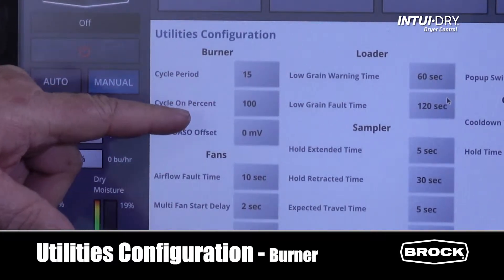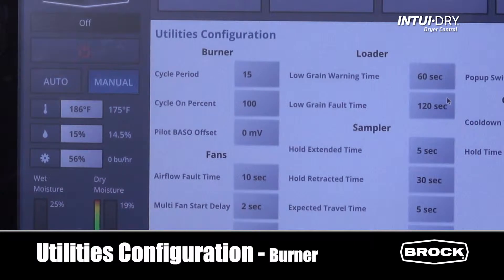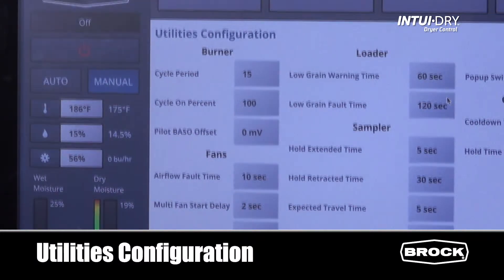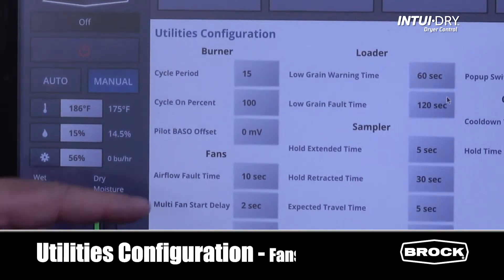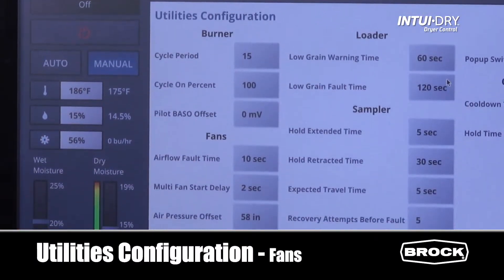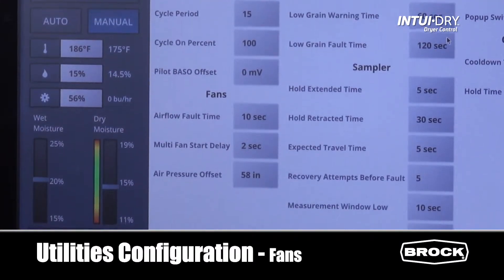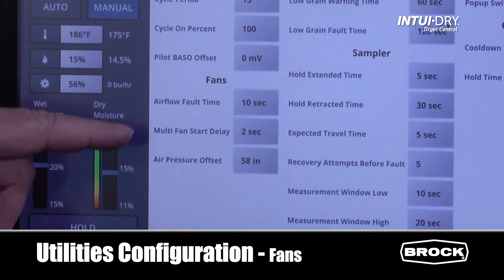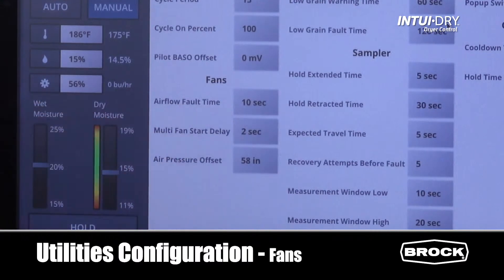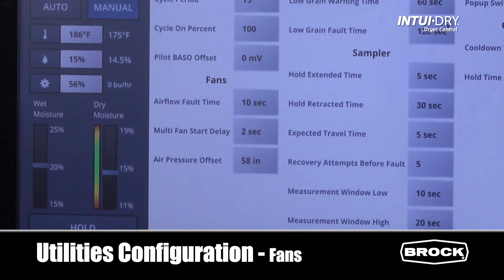On the fan airflow fault time, this is how long we wait to confirm air pressure once the fan starts. The multi-fan start delay is the time we wait between starting fan number one to fan number two, fan number two to fan number three, and so forth. The air pressure offset is also adjustable.